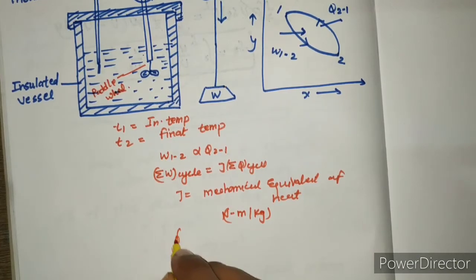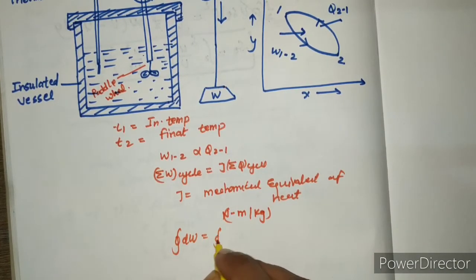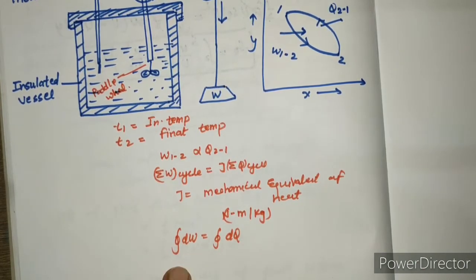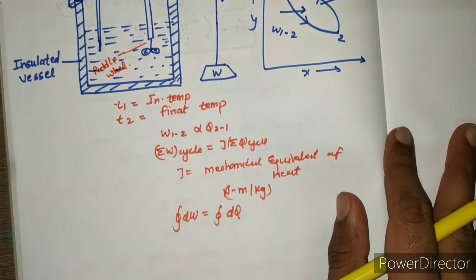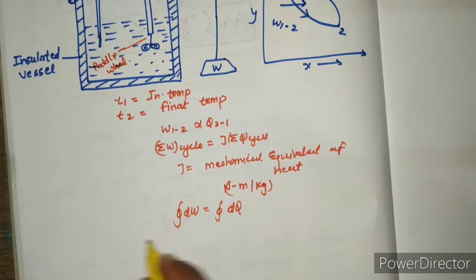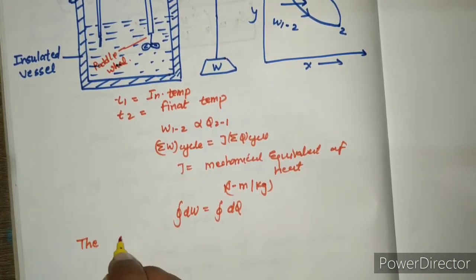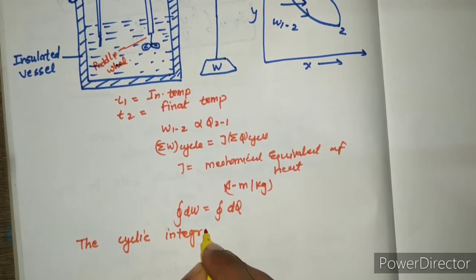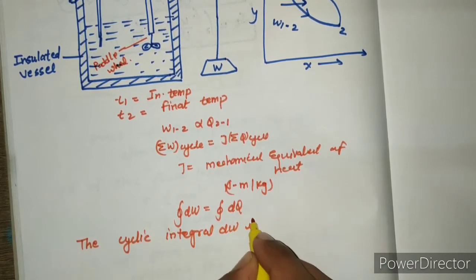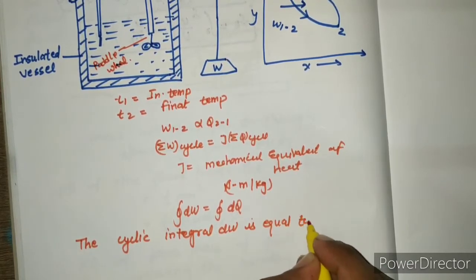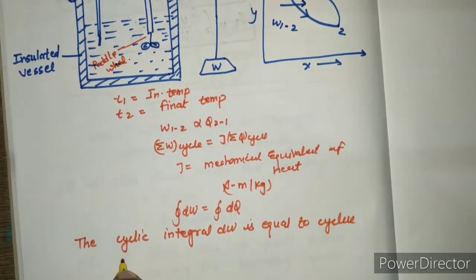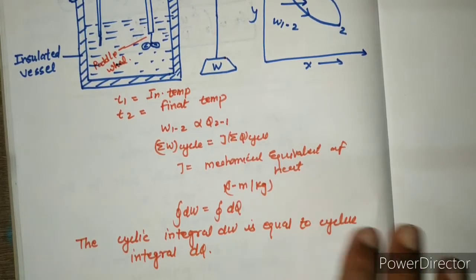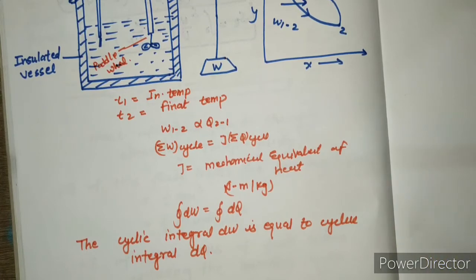According to the equation, dw equal to dq, cyclic integral dw is equal to cyclic integral dq. This is the experiment of the first law of thermodynamics. That means the cyclic integral dw is equal to cyclic integral dq. Thank you for watching this video, like and subscribe.